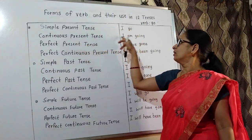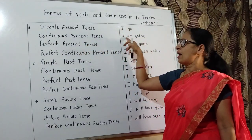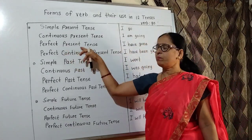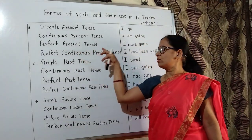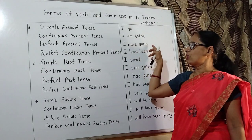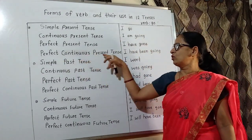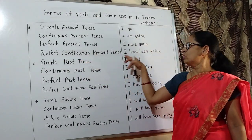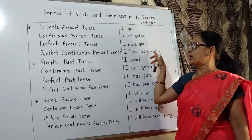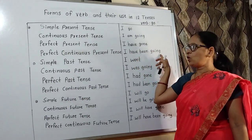Continuous present is I am going. Perfect present is I have gone. Perfect continuous present is I have been going.